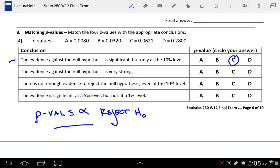Next statement says, the evidence against the null hypothesis is very strong. Well, I would argue that a couple of these look to be pretty strong, but the strongest response is going to be the p-value with the lowest value, because if my decision is to reject the null hypothesis when the p-value is small, then the smaller my p-value is, the more evidence I have against the null hypothesis. So, I'm going to say letter A here, because that's the smallest p-value.